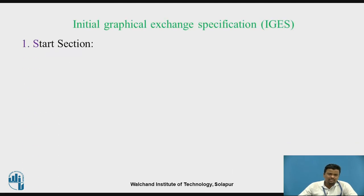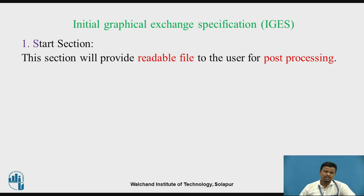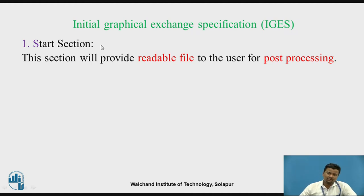What does the Start section consist of? It provides a readable file for post-processing. Post-processing means we can create meshing, create analysis, and get output from hypermesh or ANSYS software. The readable file means that with the help of .IGS, the file will enter into another software and be opened — that is why it is called a readable file, which is possible with IGES.